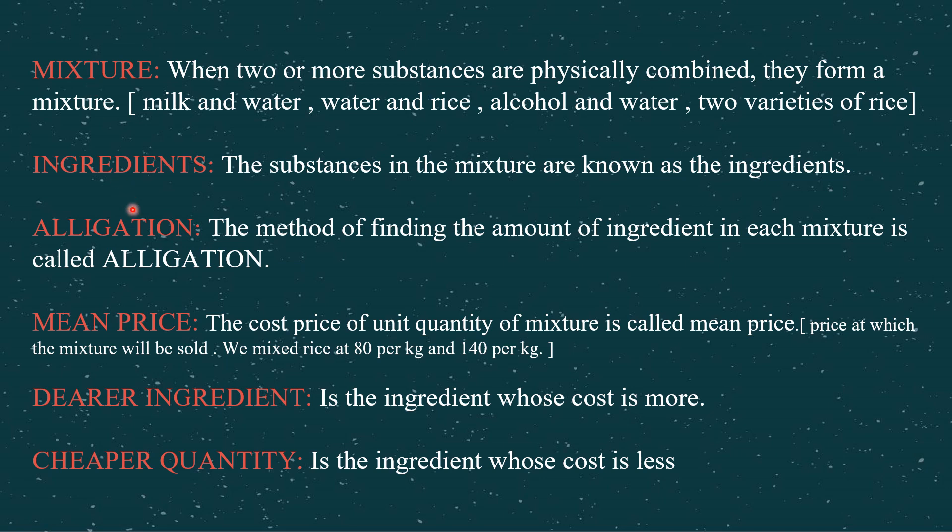What is an ingredient? The substances which you add physically to obtain a mixture are called ingredients. In our example, one variety of yellow dal is one ingredient and the other variety of yellow dal is the other ingredient. What is allegation? Allegation is the method by which you find out the amount of each ingredient in that mixture — how much quantity of cheaper dal is to be mixed and how much quantity of expensive dal is to be mixed.